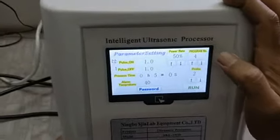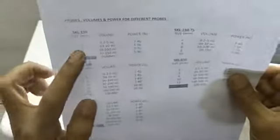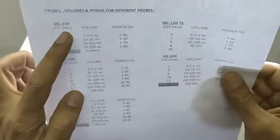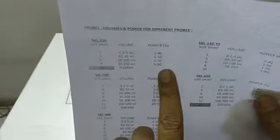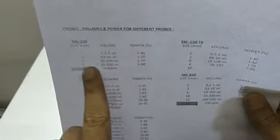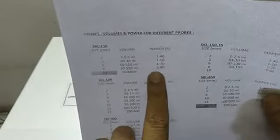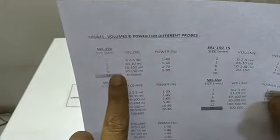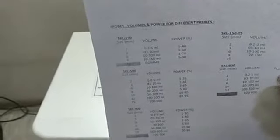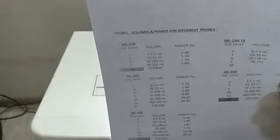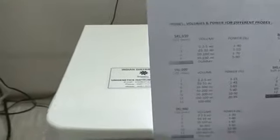Now, power rate. One more very important thing is this chart. As you can see for SKL 150, if you are using a probe of 2mm dia, the maximum power can be given 40%. For 3mm, maximum is 50%. For 6mm, maximum is 70%. And these are the volumes: 0.2 to 5, 3 to 10, and 10 to 100ml. This is very important. Make sure you do not give higher power. We are using 2mm dia probe, so we will not give more than 40% power.